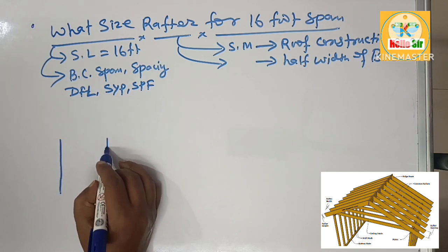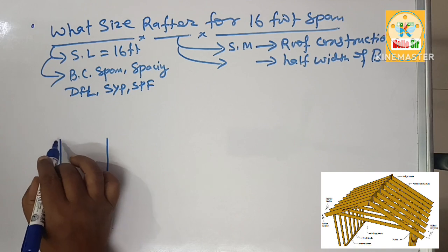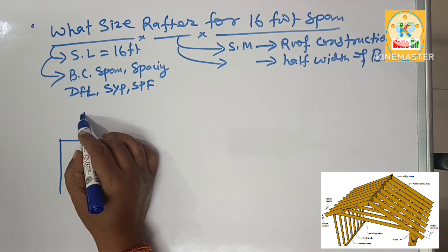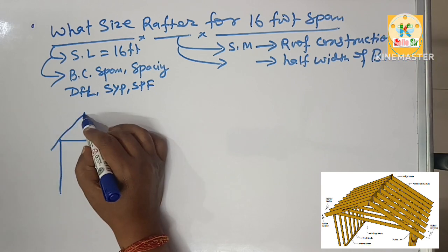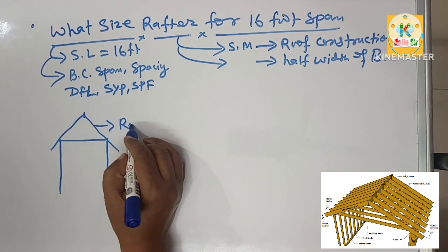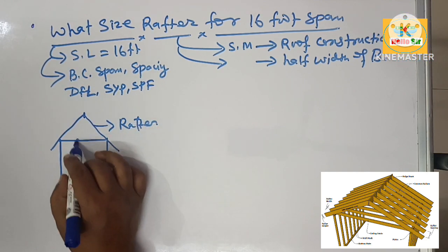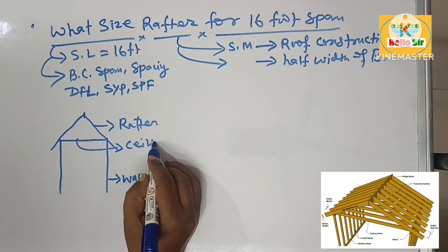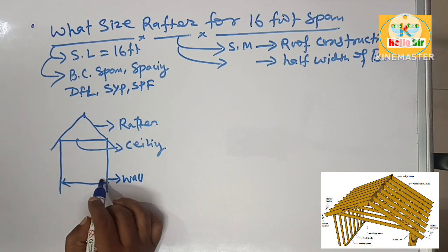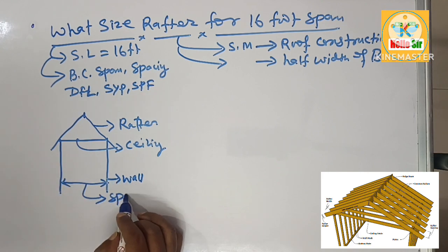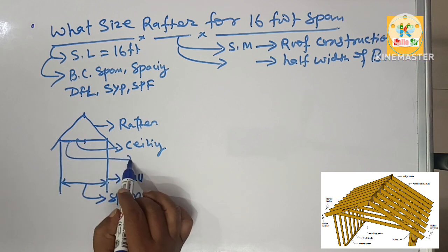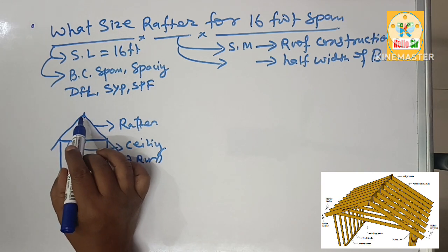Here is the diagram: this one is the bearing wall, this is ceiling joist, and this one is ridge beam, and this one is your rafter. The length between the two end walls is the span length, and half the span length is called the run.